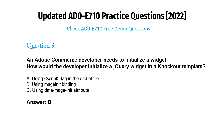Question 9. An Adobe Commerce developer needs to initialize a widget. How would the developer initialize a jQuery widget in a knockout template? A. Using a script tag at the end of file. B. Using mage/net binding. C. Using data-mage-init attribute. Answer: B.